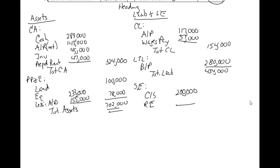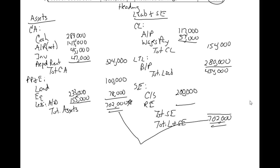Remember the accounting equation: total assets must equal total liabilities plus equity. We know total assets are $702,000, and total liabilities are $434,000. So $434,000 plus what equals $702,000? The answer is $268,000 — that's total stockholders' equity. Since common stock is $200,000, retained earnings must be $68,000. We worked backwards using the accounting equation.